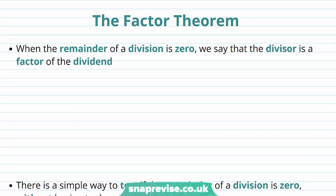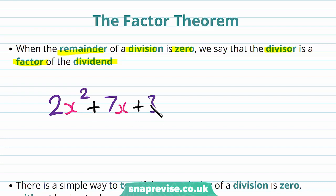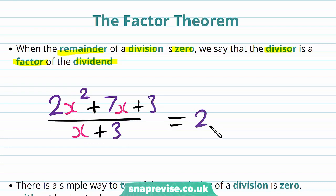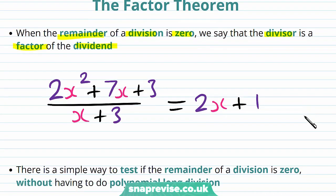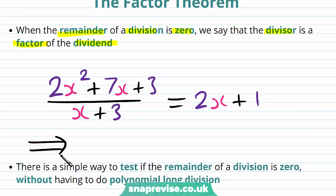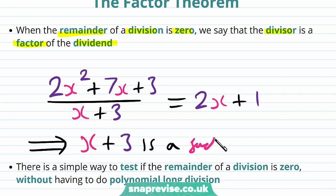So what exactly is the factor theorem? When the remainder of a division is 0, we say that the divisor is a factor of the dividend. So if we had for example 2x squared plus 7x plus 3 over x plus 3, which results in 2x plus 1, then because there is no remainder, we say that our divisor, x plus 3, is a factor of the dividend, 2x squared plus 7x plus 3.